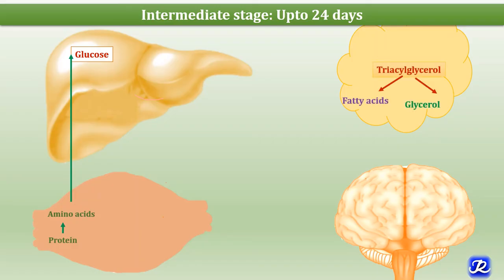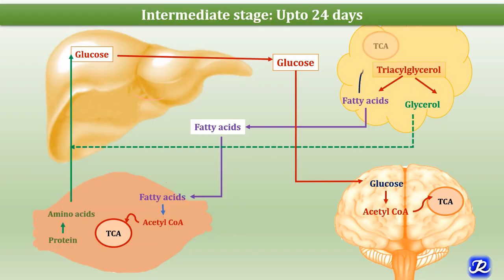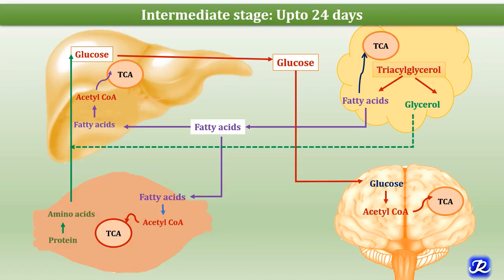Triacylglycerol breakdown continues in adipose tissue, forming fatty acids and glycerol. Glycerol is used as a precursor for gluconeogenesis, and the glucose formed is utilized by the brain, though the brain's glucose requirement is reduced in the intermediate stage. Fatty acids released from triacylglycerol breakdown are used by skeletal muscle, adipose tissue, and the liver for energy. Fatty acids are oxidized to form acetyl-CoA, but uptake into the TCA cycle is reduced because oxaloacetate is being used for gluconeogenesis, leading to an increased acetyl-CoA pool that is diverted to ketone body synthesis.